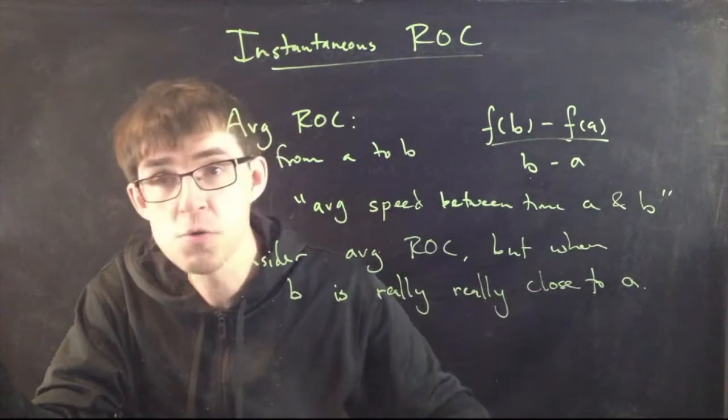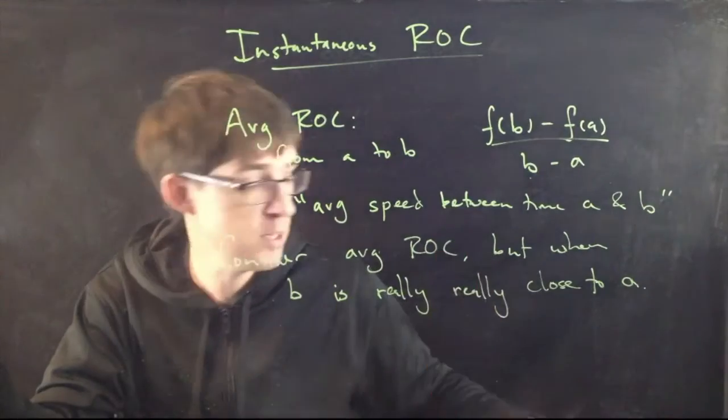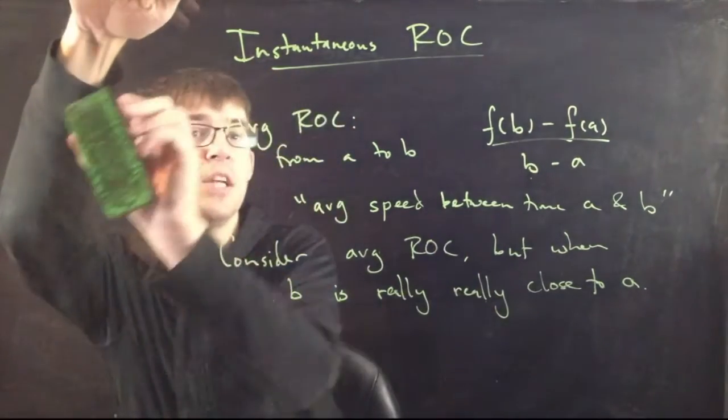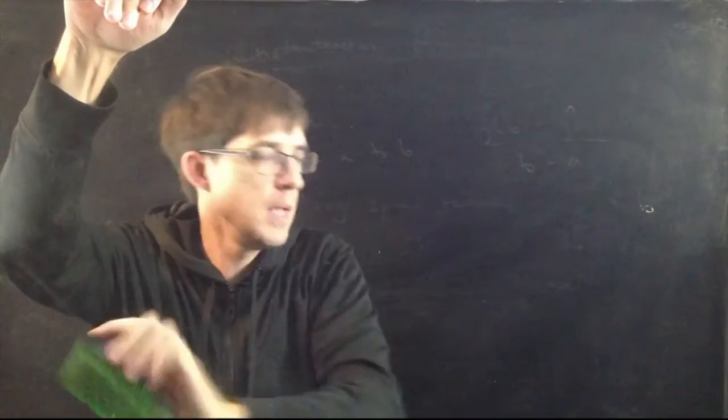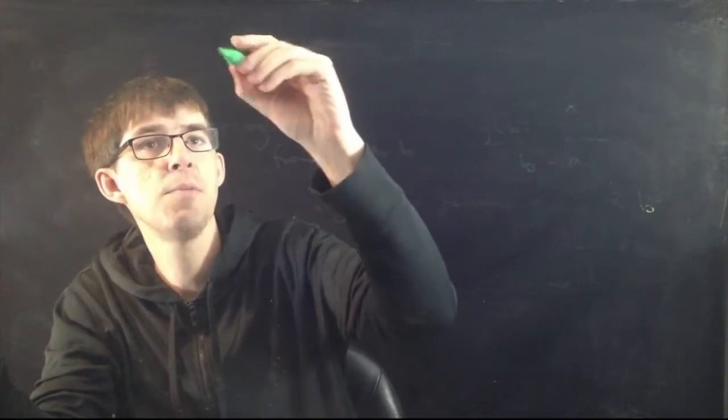Of course, this really, really close, we have language to express that mathematically. We are talking about a limit. So the instantaneous rate of change in a formula is written in terms of limits. And this is how we write it.